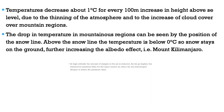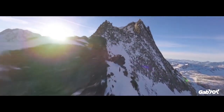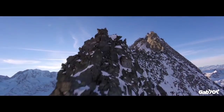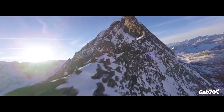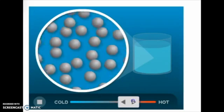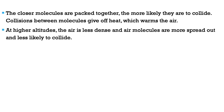At high altitude the amount of oxygen in the air is reduced and barometric pressure falls. Air pressure and air temperature both decrease with altitude. The closer air molecules are packed together, the more likely they are to collide, and this collision gives off heat which warms the air. At higher altitudes the air is less dense, molecules are more spread out, less likely to collide, and therefore less likely to produce heat.